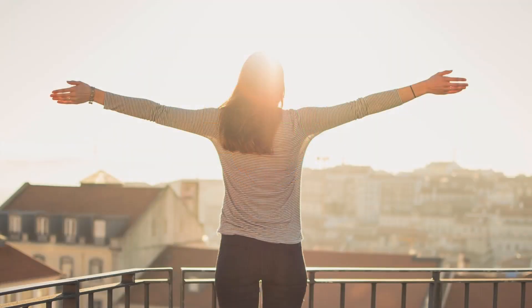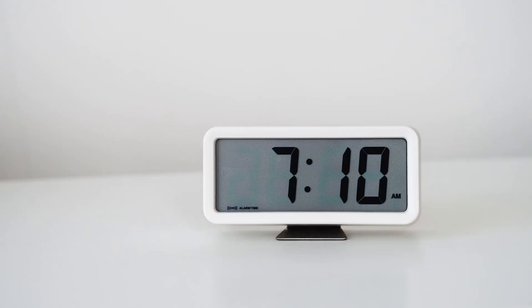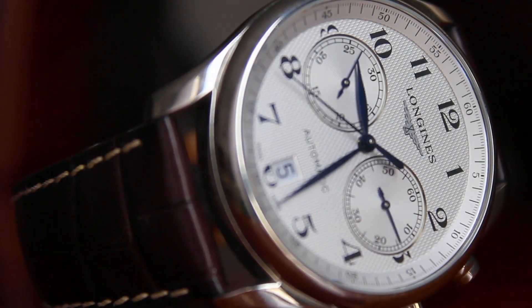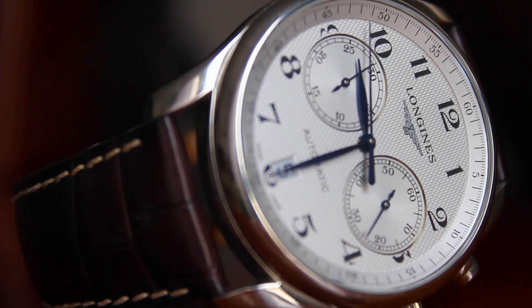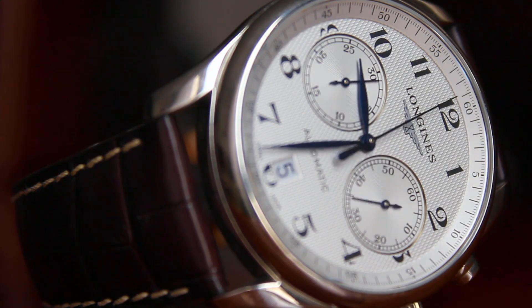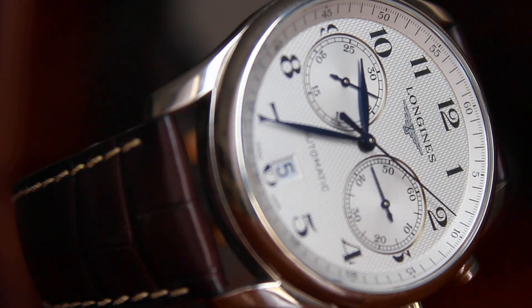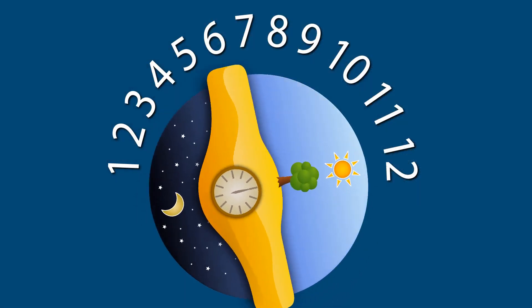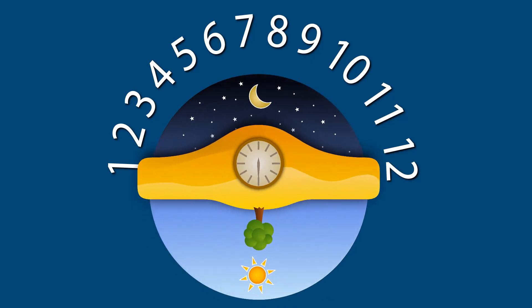Time tells you what part of the day it is. Time is told in hours and minutes with a clock. There are 24 hours in a day, there are 60 minutes in an hour, and there are 60 seconds in a minute. A day is also split into two 12-hour periods.